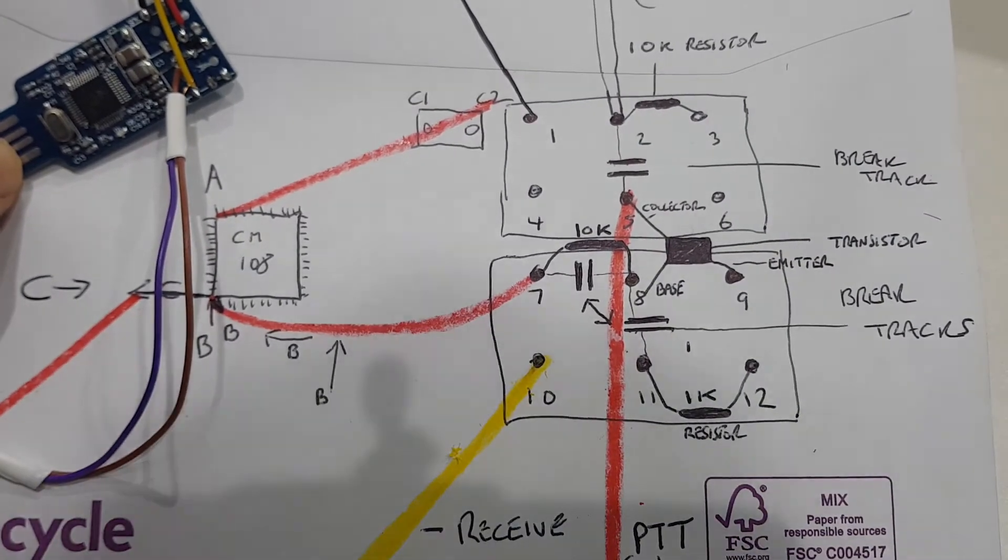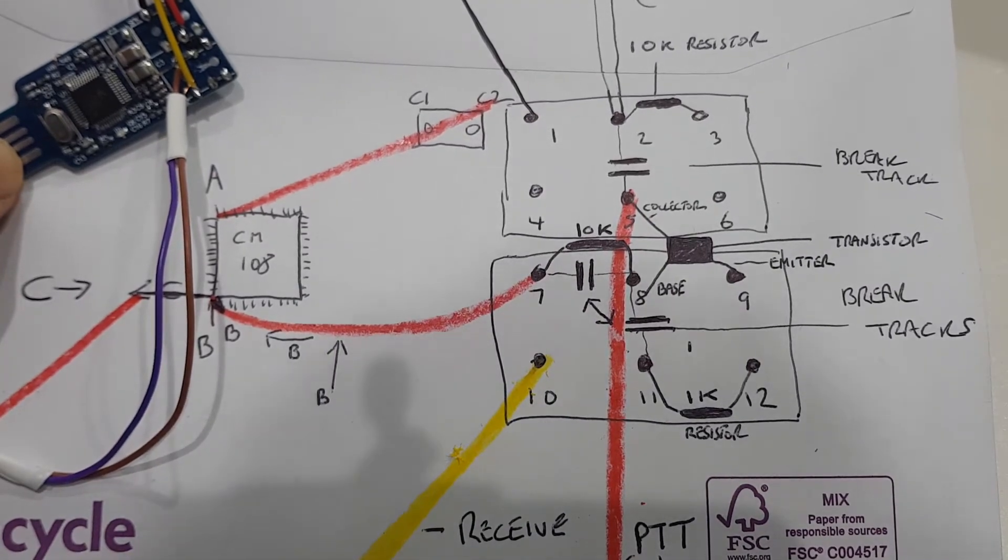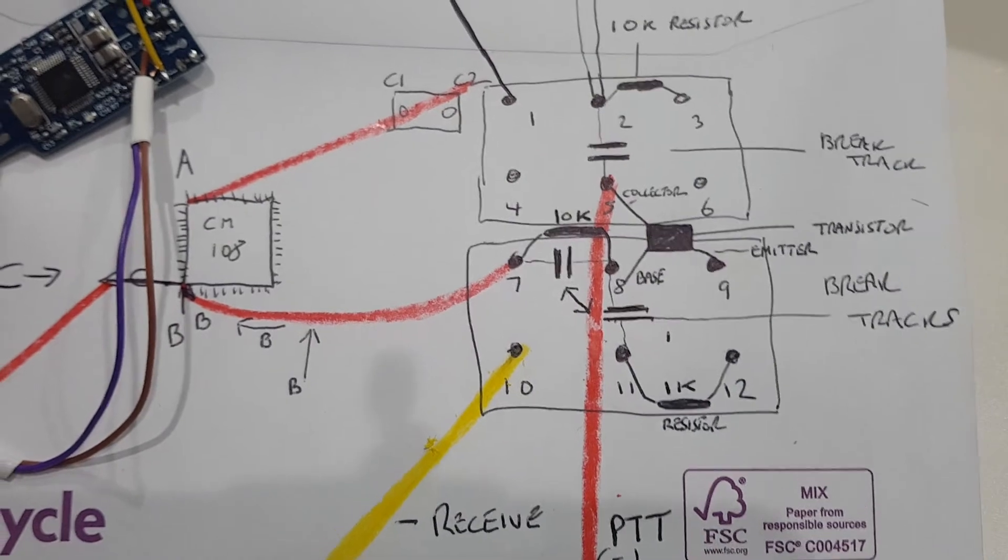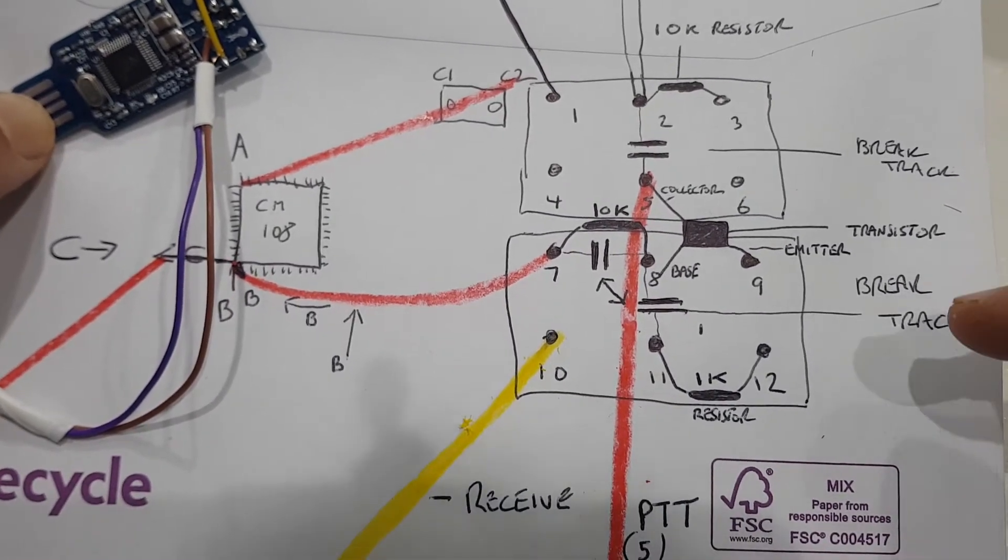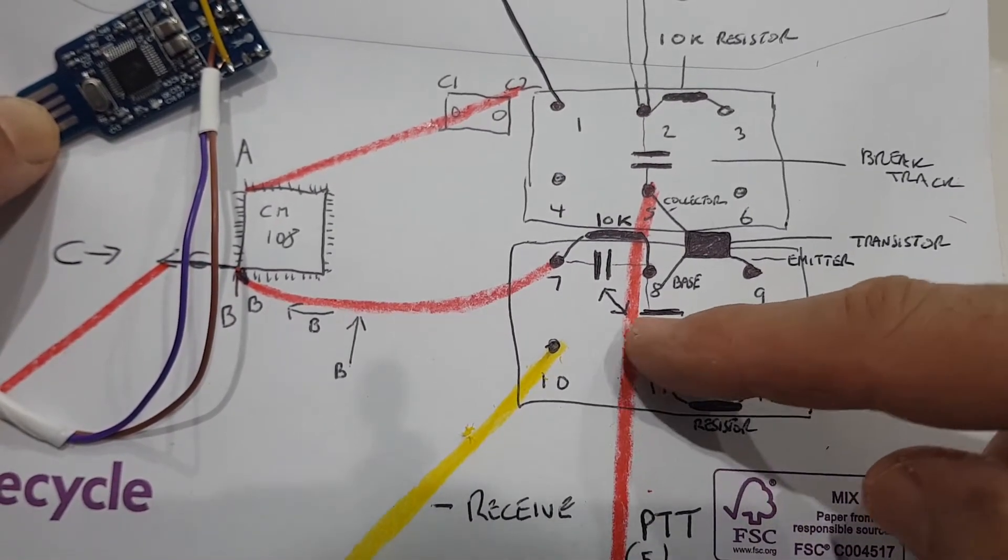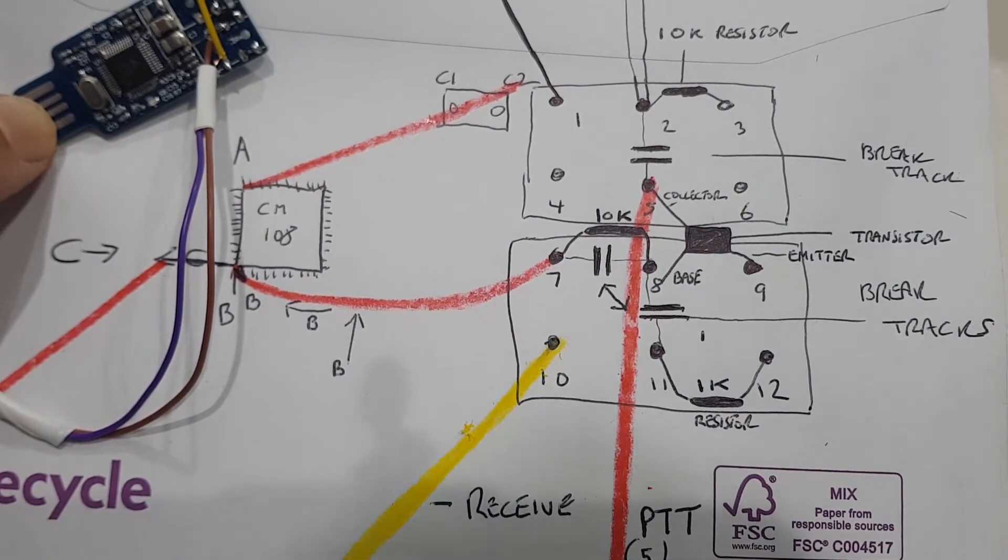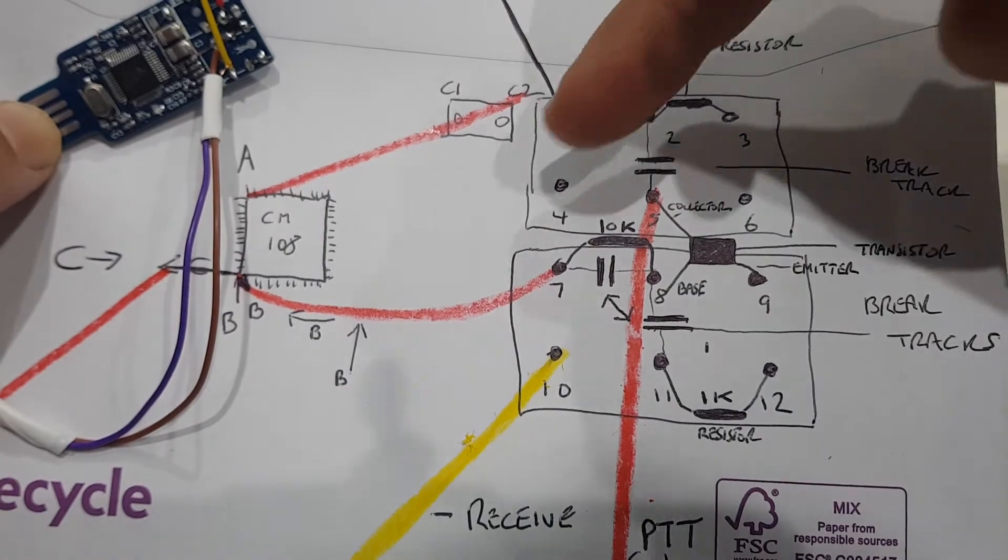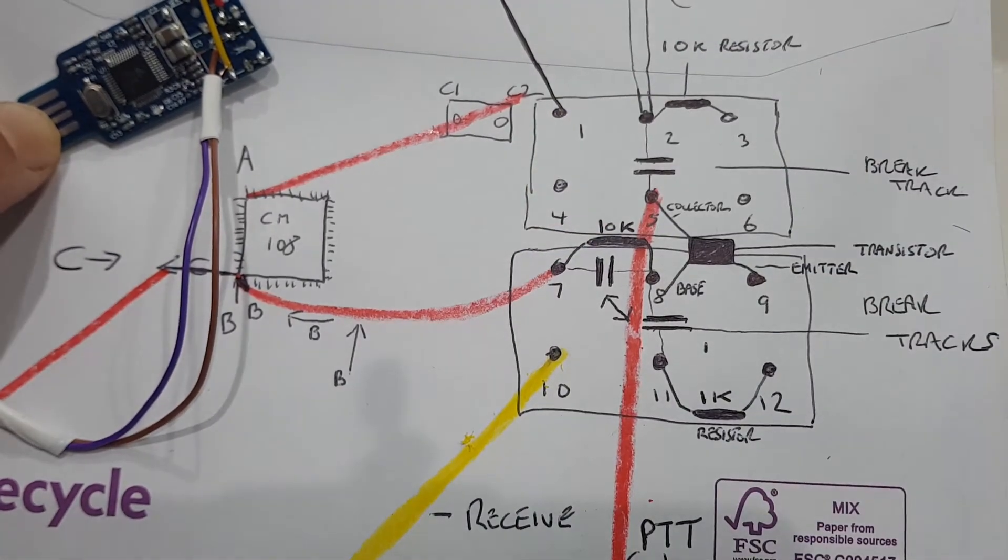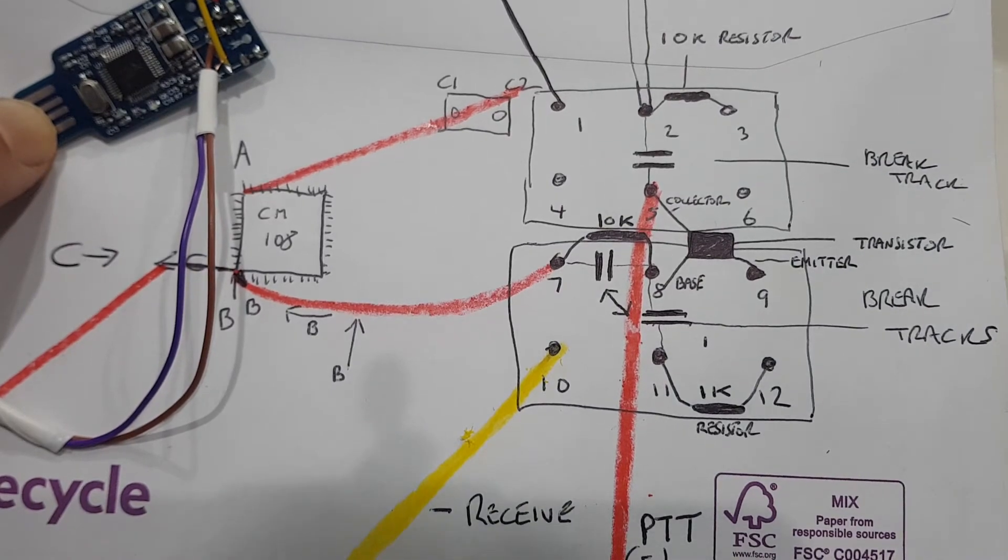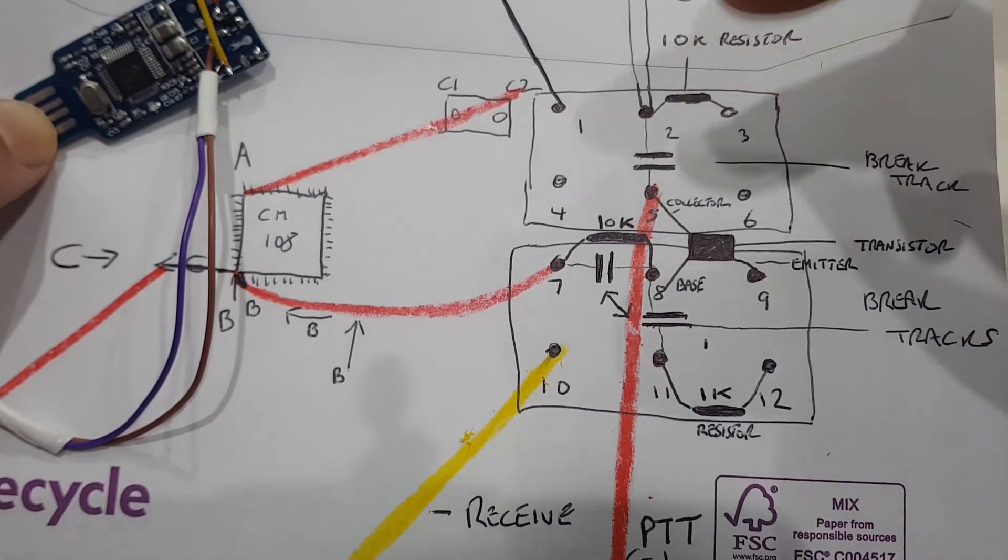So, what else we've got? We've done the resistor. Oh yeah, there's some tracks that you have to break as well. The tracks that you break are here, going between pin eight and eleven. Here, going between pin seven and eight. And here, between pin two and five.